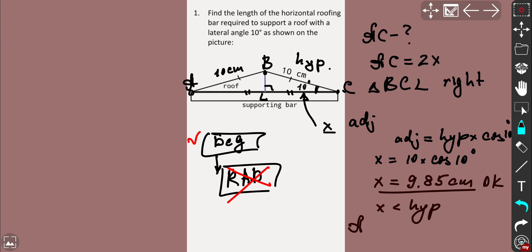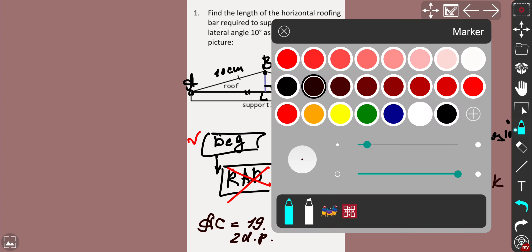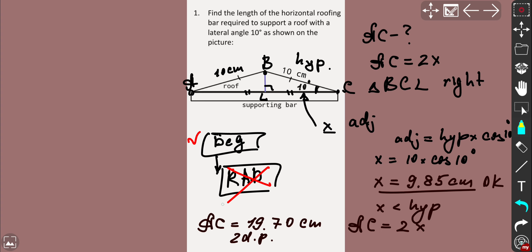From here we can figure out AC value as double x. So from here we can say that final answer for AC is going to be twice more, which is 19.70 centimeters. We round up and we'll get 19.70 centimeters. The answer is correct to two decimal places. That's the final answer, make sure you have the same.